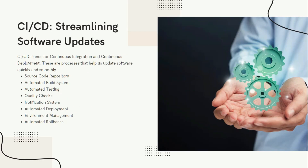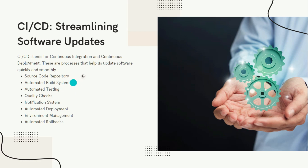Now let's talk about CICD. CICD refers to processes set up to help automate the updating and deployment of an application. The steps covered at a high level are: first, source code repository; second, build system where the build triggers automatically; third, automated testing and quality checks; fourth, a notification system; and fifth, automated deployment. All these are part of the CICD pipeline.